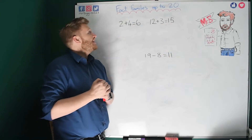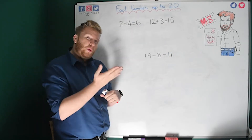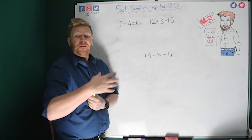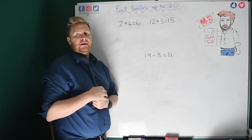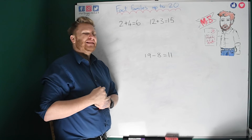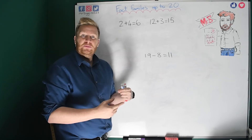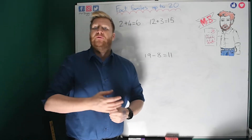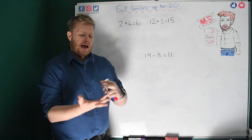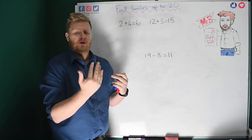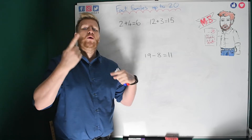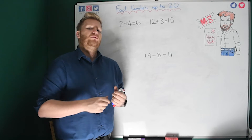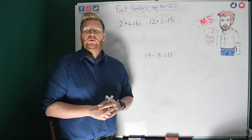Hi guys, it's Mr B here, and today we're going to be looking at fact families all the way up to the number 20. But firstly we need to know what a fact family is. Fact families are brilliant — they're there to help us know the answer to some sums without even working them out. Normally when we get a sum we have to use counters, a number line, our fingers, or work it out in our head.